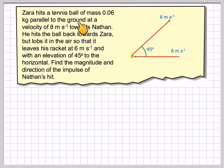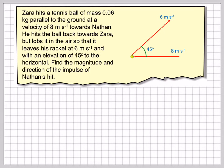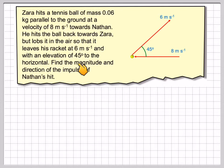Zara hits a tennis ball of mass 0.06 kilograms parallel to the ground at a velocity of 8 meters per second towards Nathan. He hits the ball back towards Zara but lobs it in the air so that it leaves the racket at 6 meters per second with an elevation of 45 degrees to the horizontal.